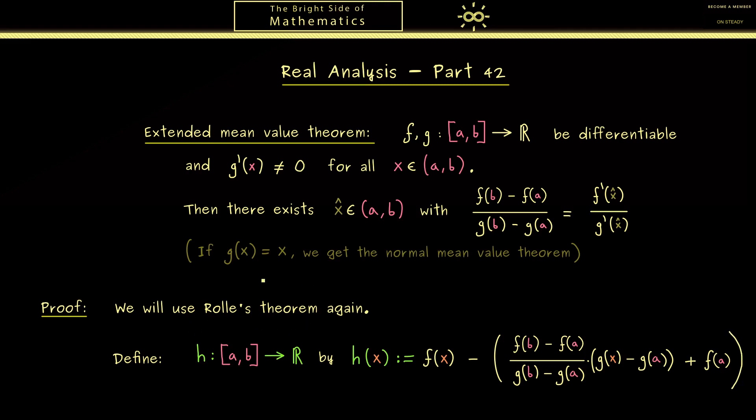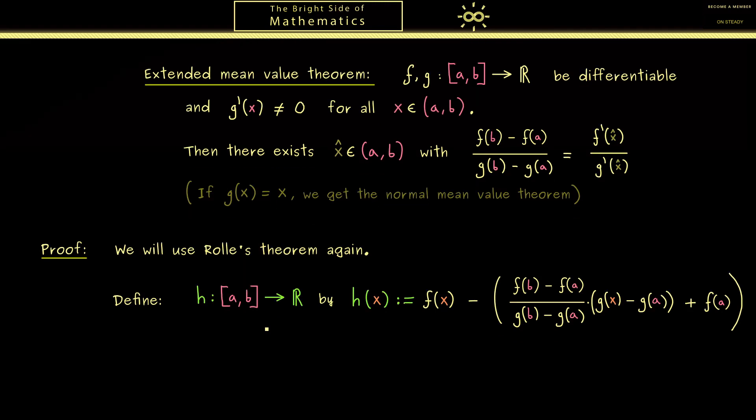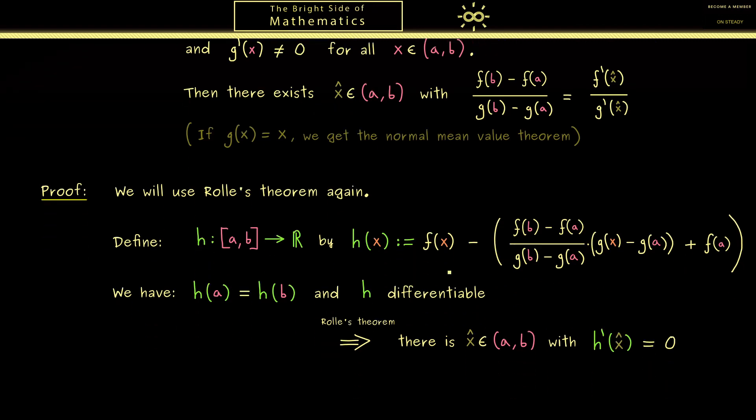To this function we can apply Rolle's theorem. What you should check is that we have all the assumptions. Differentiability is not a problem at all, and we have the zeros at the boundary. Please recall these are exactly the assumptions of Rolle's theorem, and it tells us there is a point x̂ in the open interval such that h'(x̂) is exactly zero. Therefore, the only thing left to do is to calculate h' with this formula, and this is not hard at all.